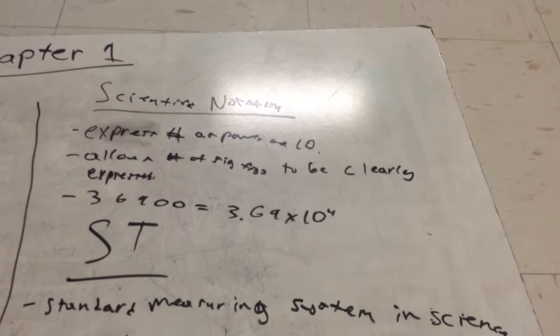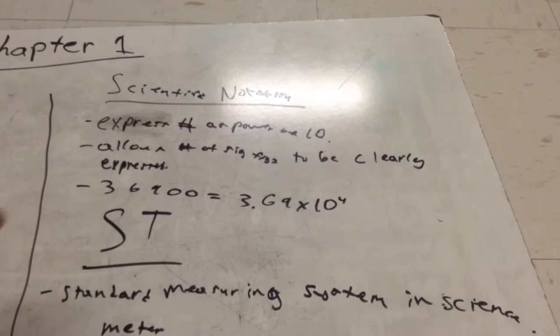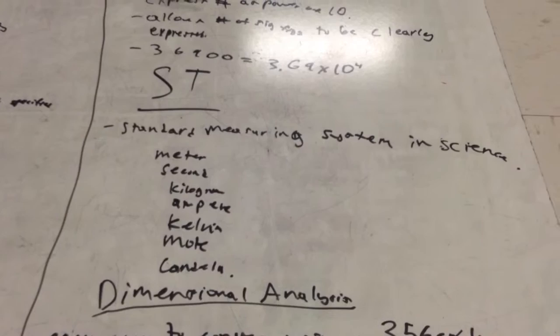Scientific notation expresses numbers as powers of 10. It allows numbers and significant figures to be clearly expressed. For instance, 36,900 equals 3.69 times 10 to the fourth.